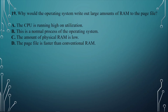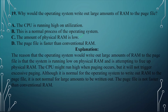Question number nineteen: Why would the operating system write out large amounts of RAM to the page file? A. The CPU is running high on utilization. B. This is a normal process of the operating system. C. The amount of physical RAM is low. D. The page file is faster than conventional RAM. The answer is C, the amount of physical RAM is low. The reason the OS writes large amounts of RAM to the page file is that the system is running low on physical RAM and is attempting to free it up.